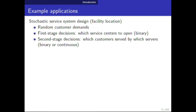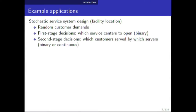There are tons of applications where making discrete decisions under uncertainty is important. One example is stochastic service systems design, where the randomness is in the customer demand, which is unknown in advance. You have to design your system network — deciding which facilities to open and their capacity — in advance. Then the second stage decisions are which customers are served by which servers, after observing demand. First stage variables might be binary (whether to open a facility), and second stage variables could be binary or continuous depending on whether customers must be served from a single location.